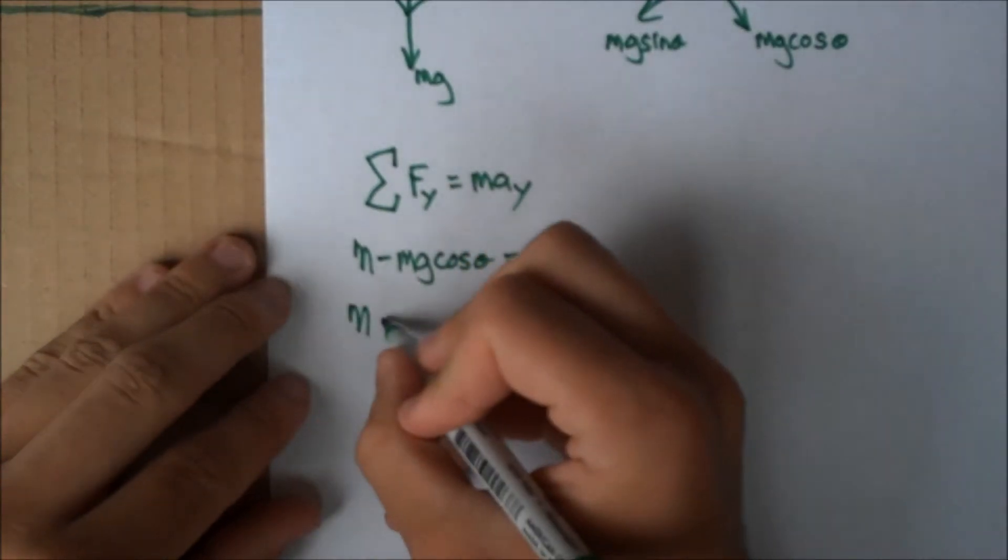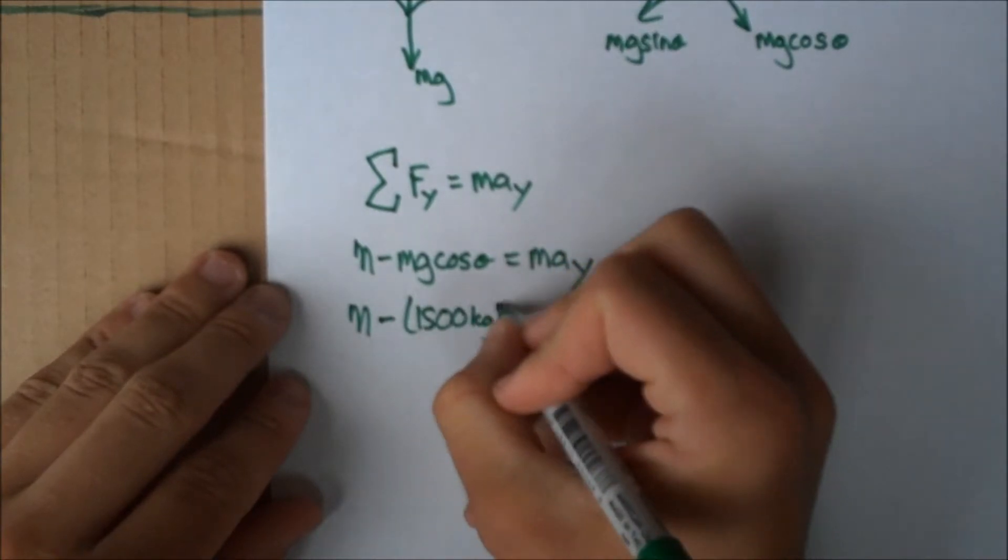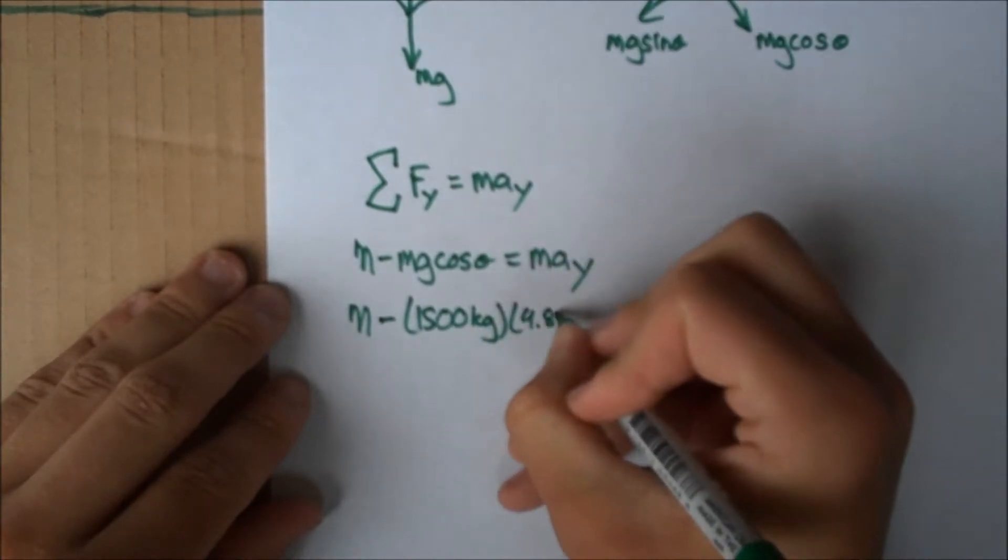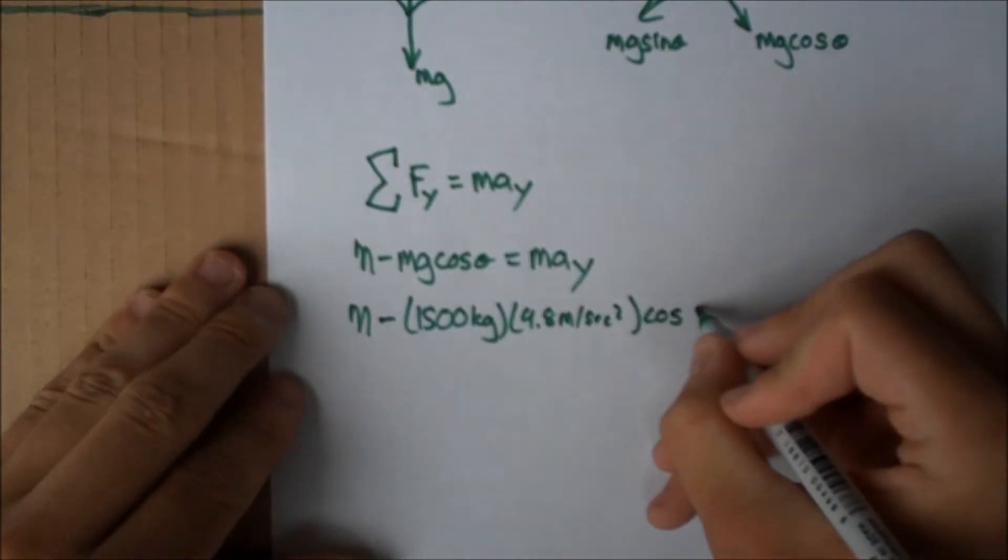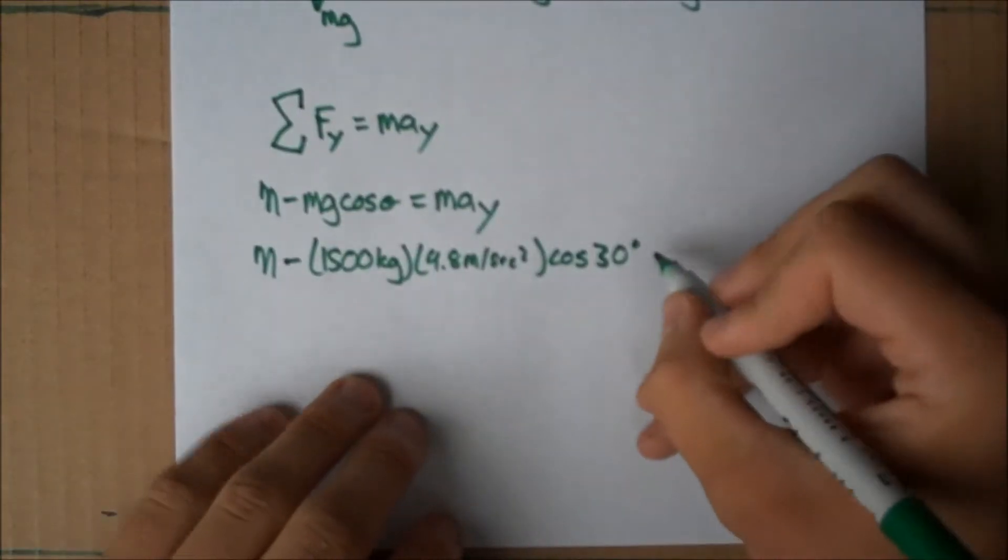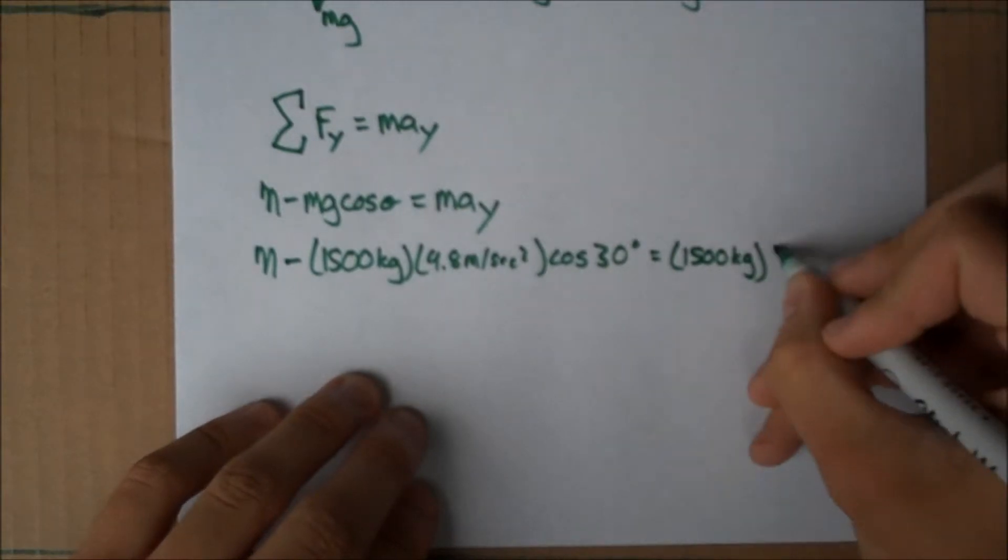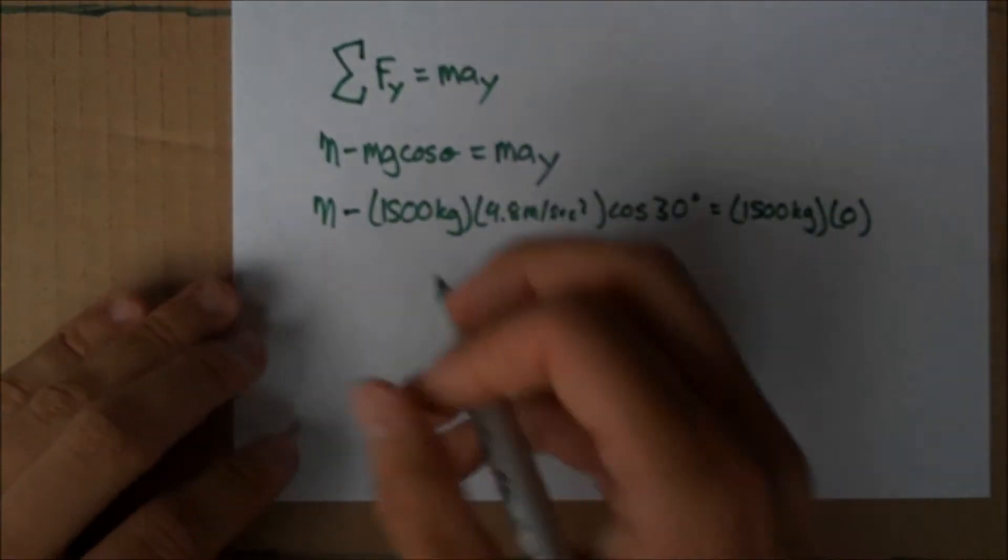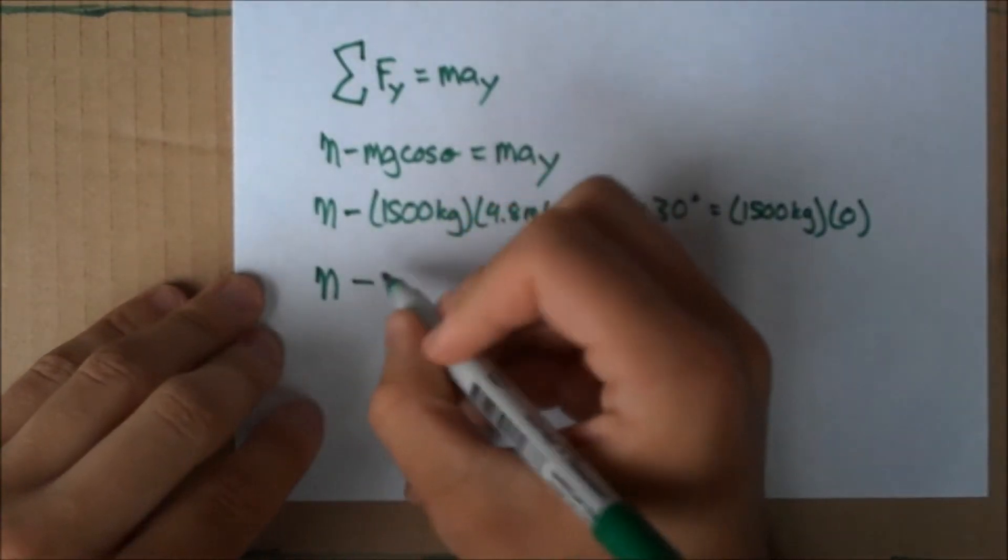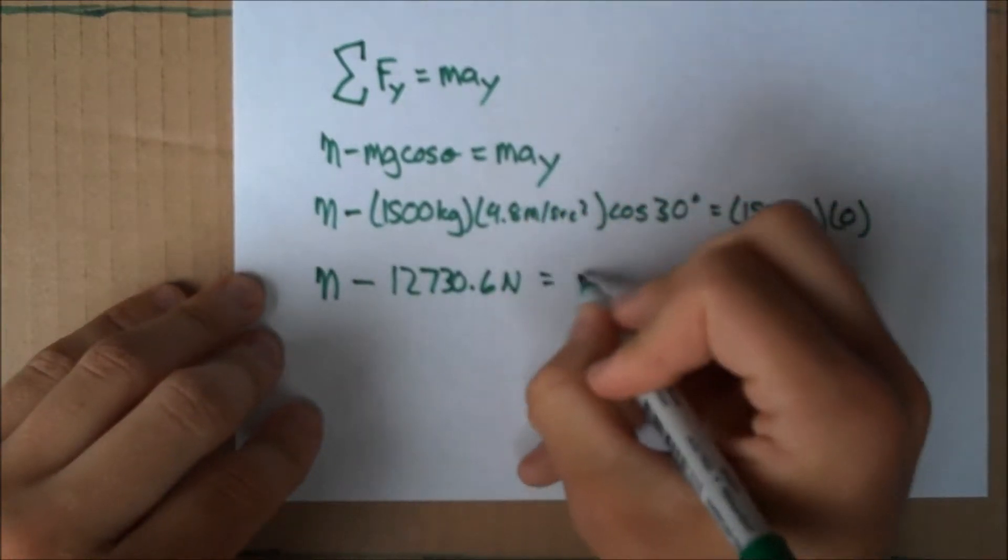When we plug in our values, we get normal force minus 1500 times 9.8 meters per second squared times cosine of 30 degrees, and then mass again is 1500 kilograms, and the acceleration is zero because the car is not moving up or down in the Y direction.